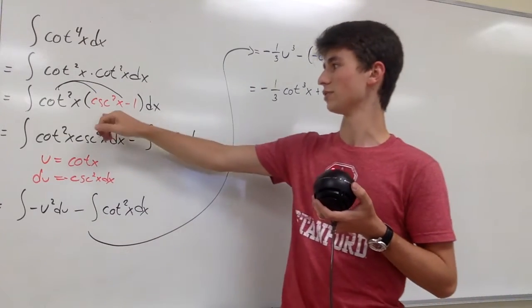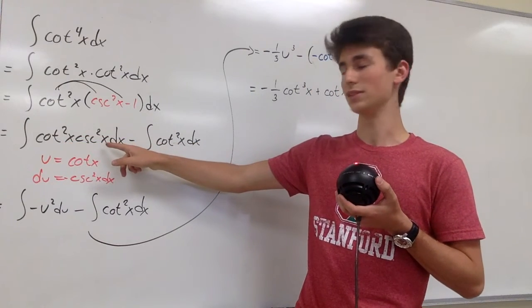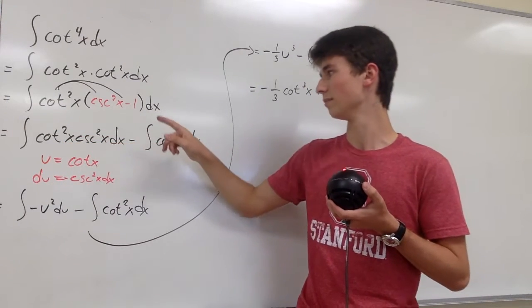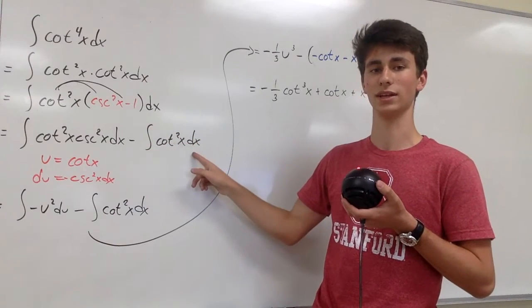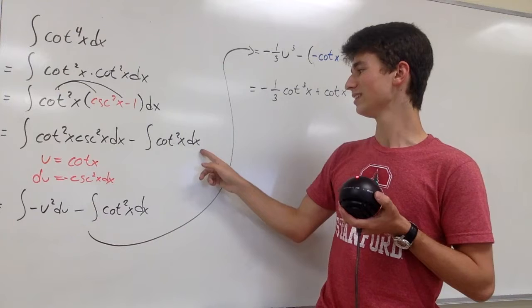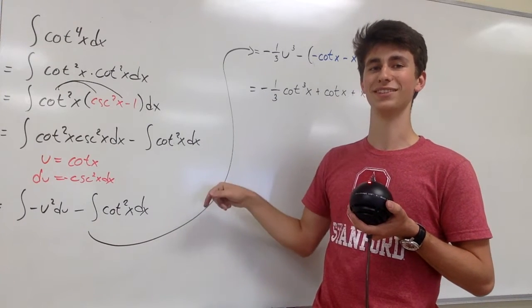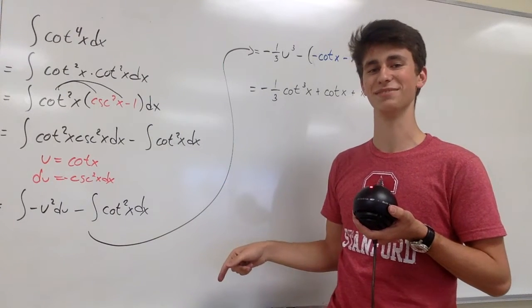So after we distribute, we get cotangent squared of x times cosecant squared of x dx minus, and we can split the integrals, minus cotangent squared of x dx. And for this integral, you're going to have to refer to the second video in this series, which will be linked down below in the description.